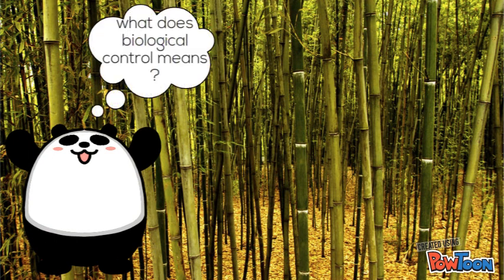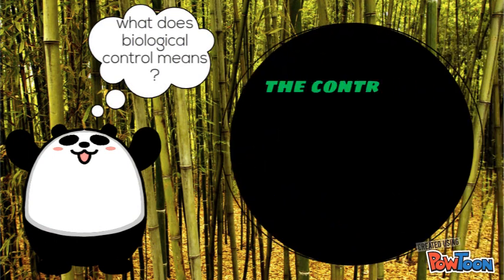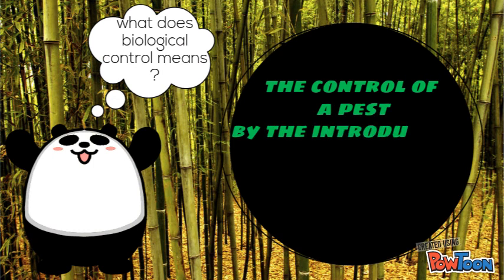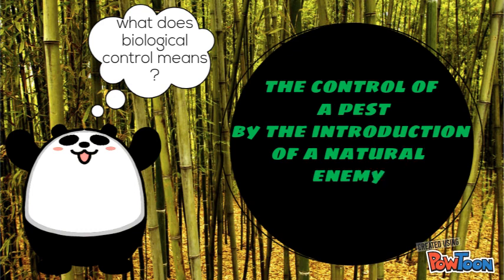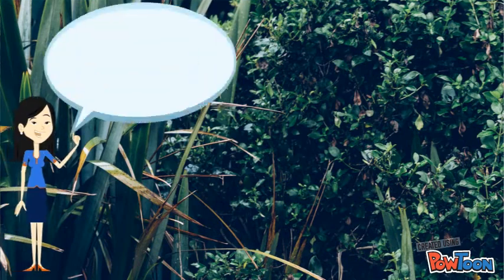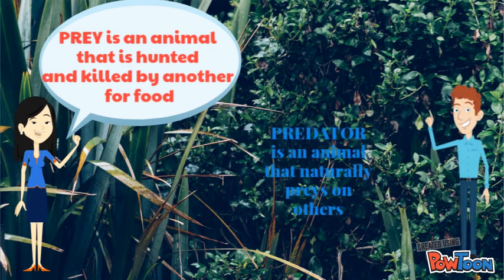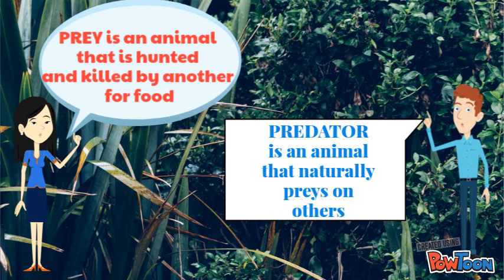What does biological control mean? The control of a pest by the introduction of a natural enemy or predator. Prey is an animal that is hunted and killed by another for food. A predator is an animal that naturally preys on others.